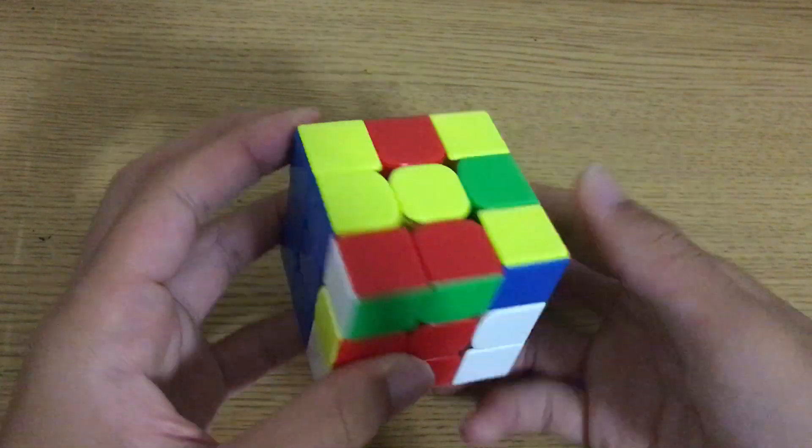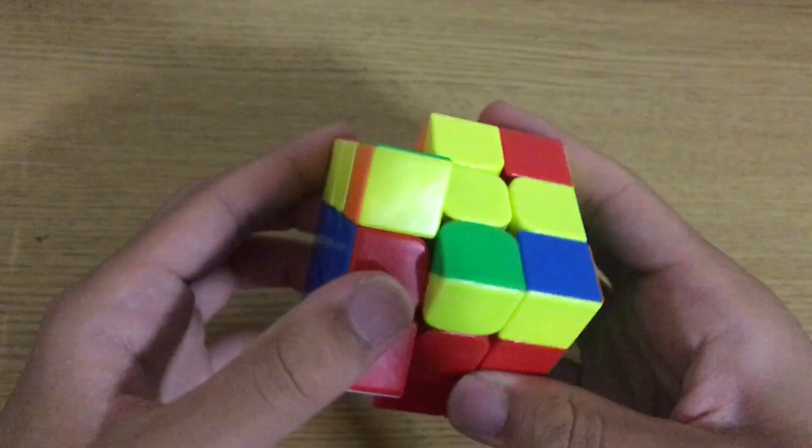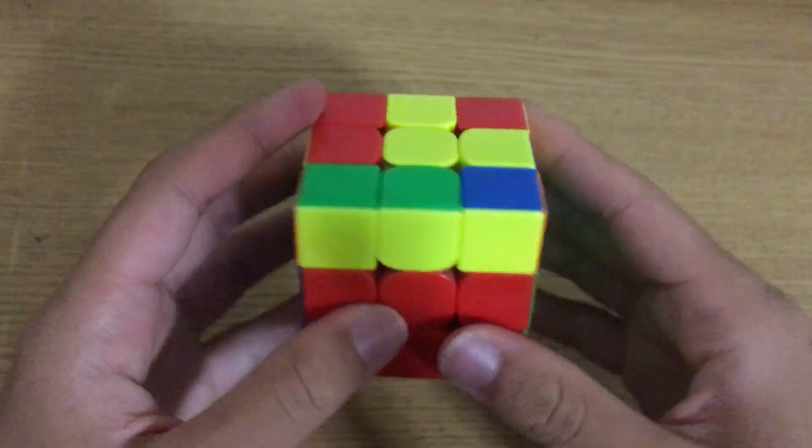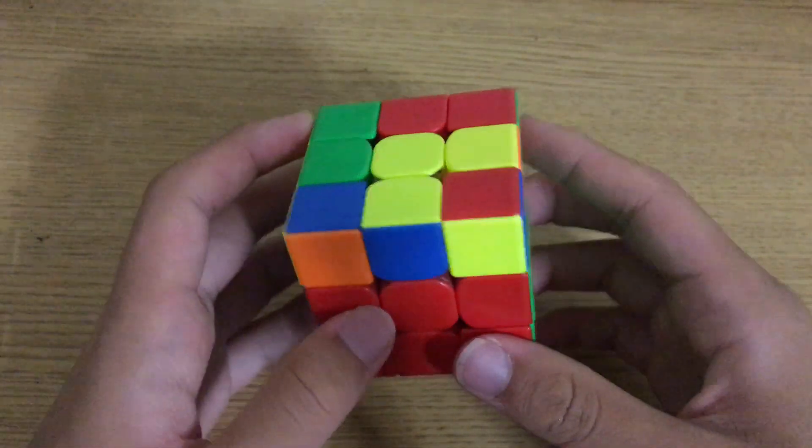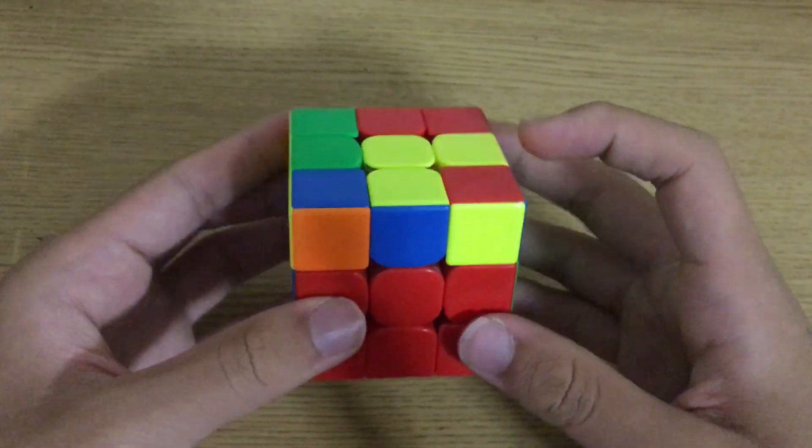And now just regular third pair and fourth pair. And now unfortunately here David got a very massive lockup, preventing him from getting his PB single according to him, but this is just a very easy last layer.